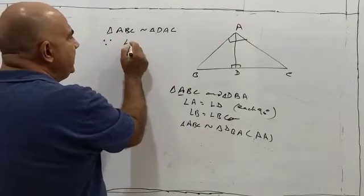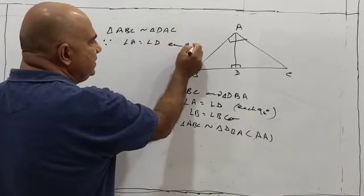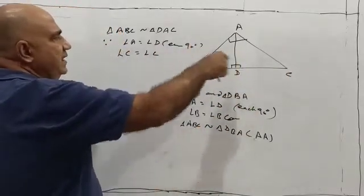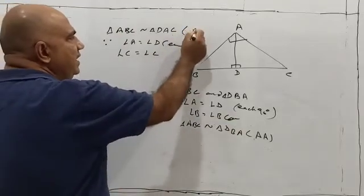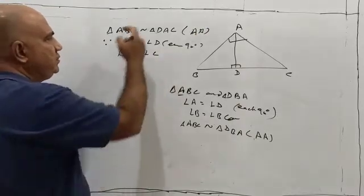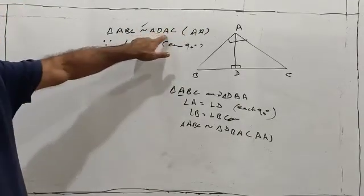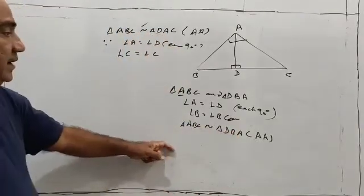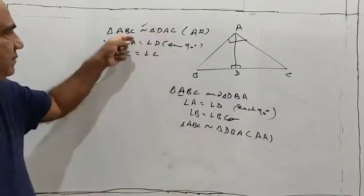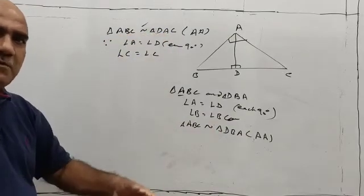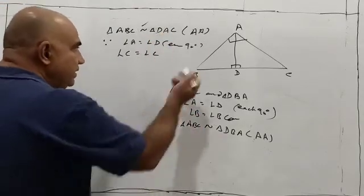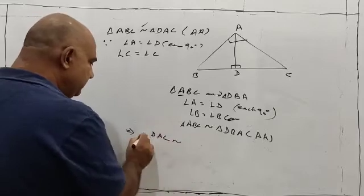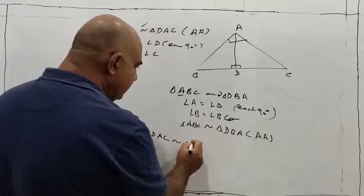The reason: angle A equals angle D, each 90 degrees, and angle C equals angle C — angle C is common in triangle DAC and triangle ABC. So this is AA similarity criterion and these two triangles are similar. Now, triangle DAC is similar to triangle ABC, and also triangle DBA is similar to triangle ABC. From these two results, triangle DAC is similar to triangle DBA.